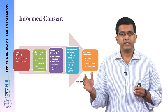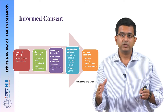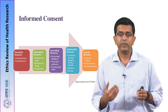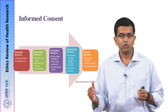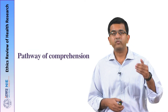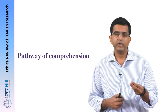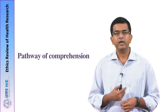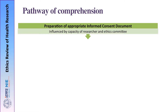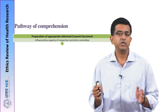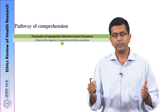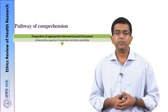Often in research projects, emphasis is laid on documentation while the rest of the elements are given less importance. But all elements are required for a good and thorough informed consent process. Now let us look at the pathway of comprehension — how a research participant understands the information provided. First, the facts to be provided must be decided, the informed consent document prepared by the researcher, and reviewed and approved by the ethics committee. This is the most important step in the comprehension pathway, and it is influenced by the capacity of the researchers and the ethics committee.